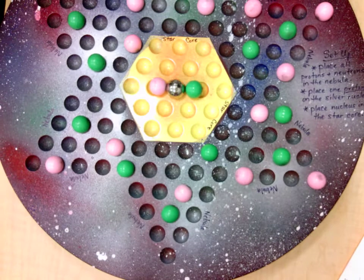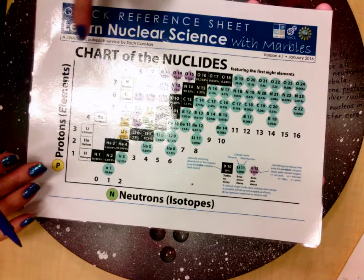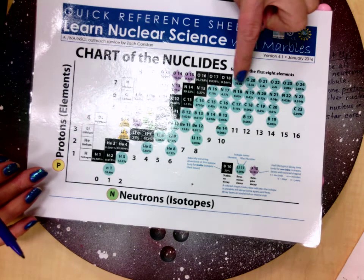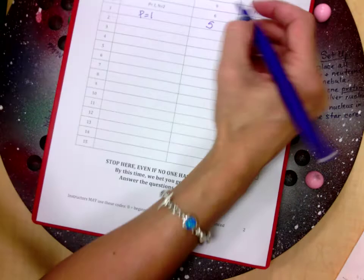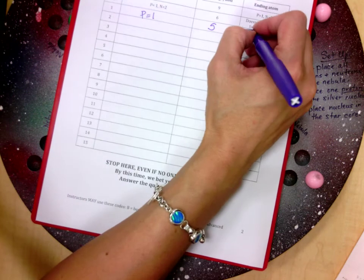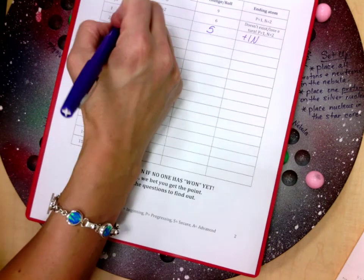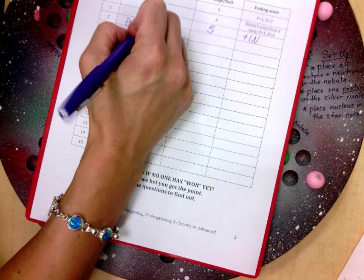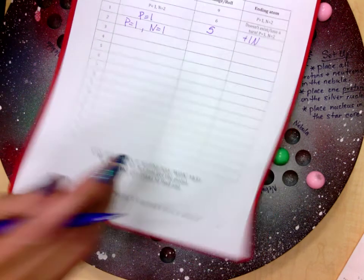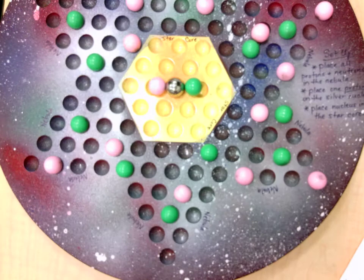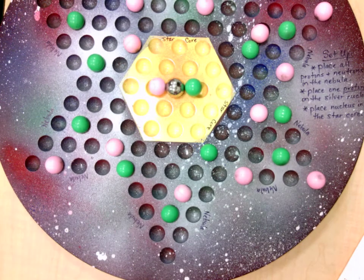What we are trying to do is race our partner to get to this top row. Anywhere on this top row and you win. So what that resulted in was I added a neutron. So now I have one proton and one neutron. So then my partner gets a turn and play would continue.